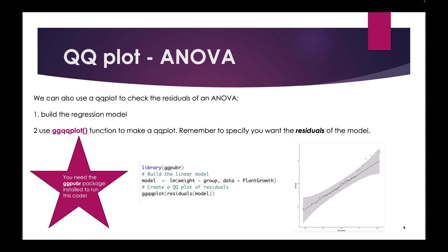The first thing you need to do is build your ANOVA regression model, specifying the dependent variable — in this case weight — and the group variable — in this case called group. I'm using a built-in R dataset called PlantGrowth, specified at the end of the model, but this is where you would specify whatever dataset you are using. Then you create the QQ plot by typing ggqqplot and in brackets residuals and then the model name. Remember to specify residuals so it knows which values to put in the graph. The results show the data is normally distributed, with points falling closely to the diagonal line.